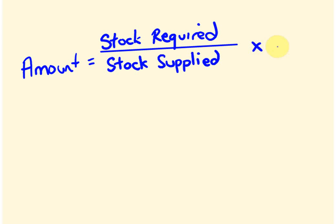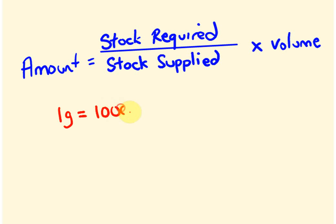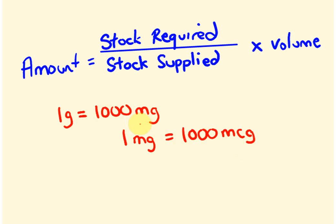We're also going to be using this thing called volume. Some drugs are said to be, say, five milligrams in two mil — so it's a strength based upon a volume. This particular part isn't always used, and you'll see where it is and isn't used in this video. Occasionally we'll also have to work out the stock required based upon a patient's weight. We'll deal with that as we come along.